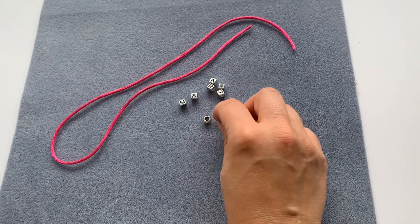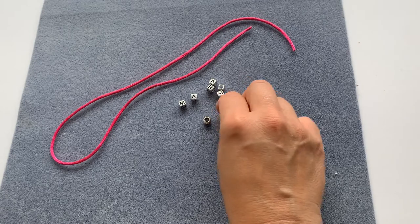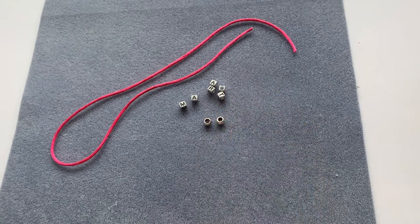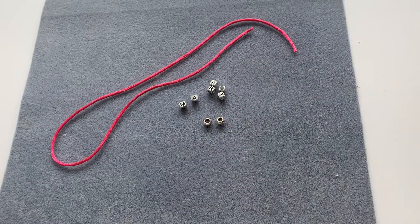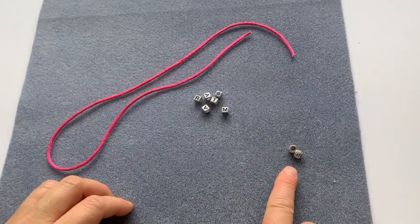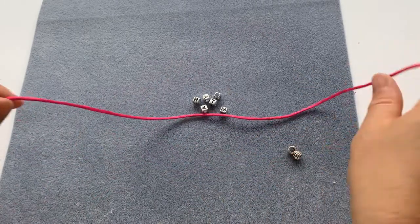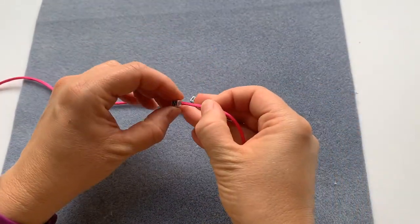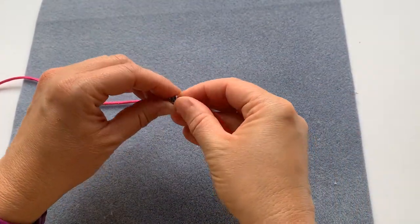And then finally I've got these silver beads just to add onto the ends to add a bit of a decorative effect, and again they have quite large holes so I know that my cord will fit through them. To start off with then, I'm just going to set the end beads to one side and first thing I'm going to do is thread on the letter beads.